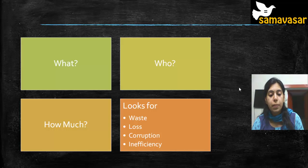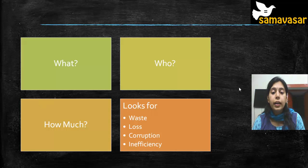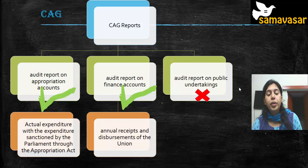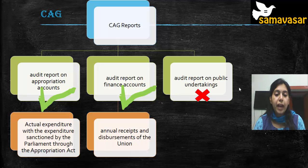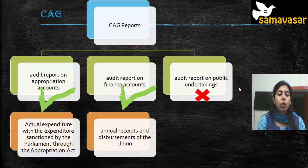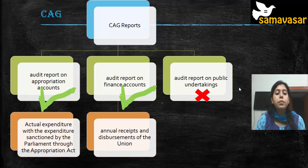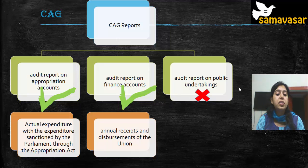The committee looks for waste, loss, corruption, and inefficiency in the audit report on appropriation accounts and the audit report on finance accounts. For example, the Public Accounts Committee examines the CAG report on appropriation accounts, which checks that actual expenditure conforms to the expenditure sanctioned by parliament through the Appropriation Act.